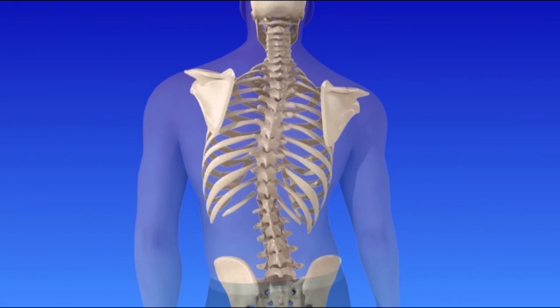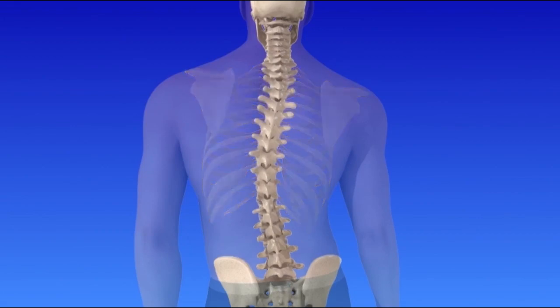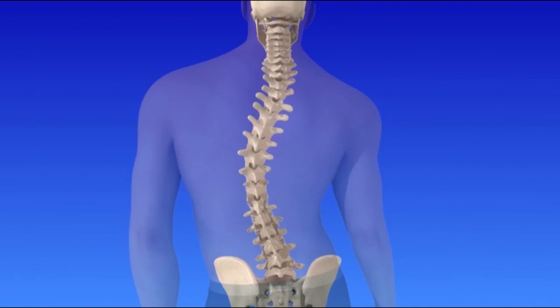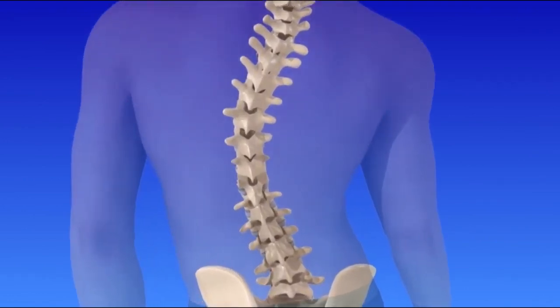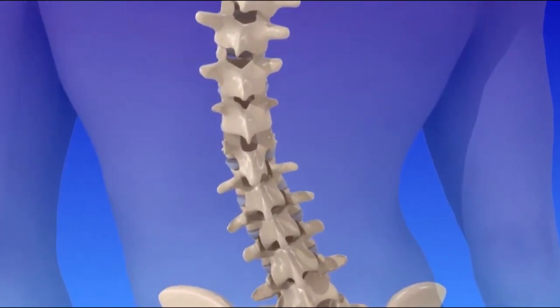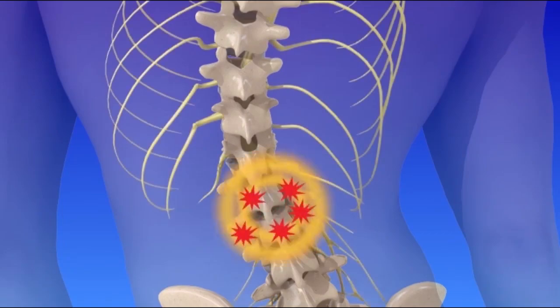Scoliosis is a progressive condition, meaning that it can get worse over time. If left untreated, a severe curvature can form, causing the vertebrae to rotate and move even further out of position. This can make it difficult to breathe or cause pressure on the spinal cord and nerves, causing pain and fatigue.